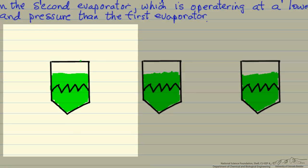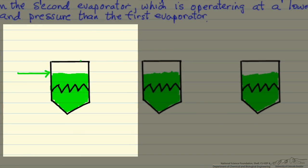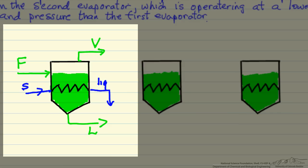In the first effect, we're going to have a feed coming in — this is a liquid at low concentration of solute. We're going to vaporize some fraction of this and create a more concentrated solution of liquid. We carry out this evaporation by having steam fed to heat transfer coils, with liquid condensate leaving. We assume the feed is at saturation pressure. T1 is the temperature in the evaporator, also the temperature of the liquid, and the steam comes in at temperature TS.